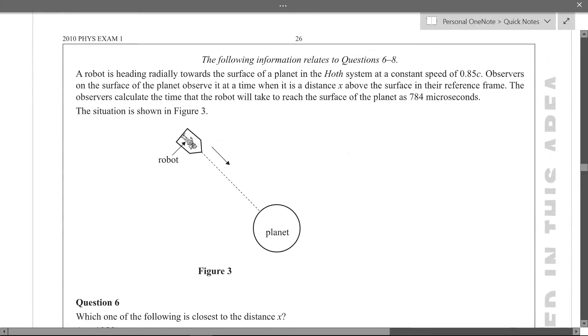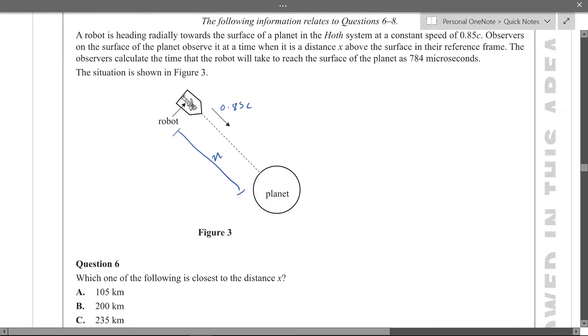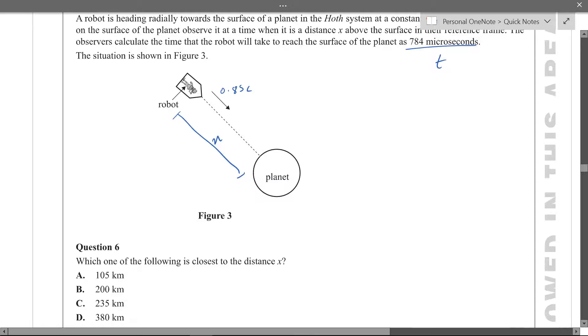Question six, so a robot is headed towards the planet in the hot system at 0.85c and observers notice the time it takes. Observers on surface of the planet observe it at a time when it is distance x above. So it's distance x above the surface and the time it takes to reach the planet measured by the observers is this. So if it's measured by the observers then they're not at rest relative to the robot that's moving, so this is t not t0. Which of the following is closest to the distance x?